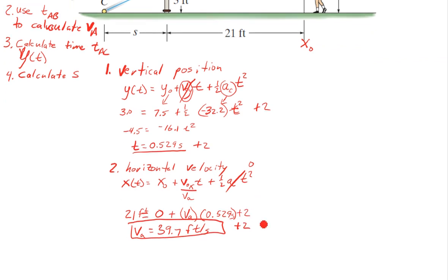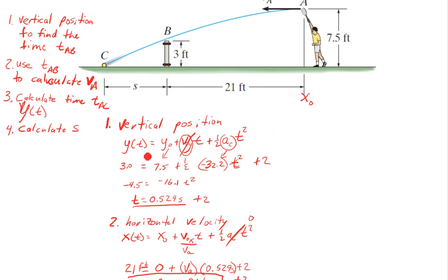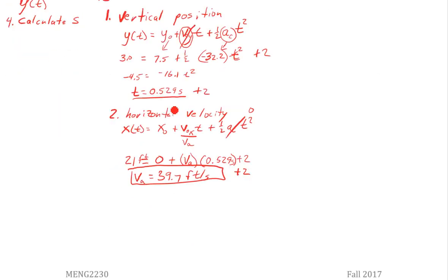Now finally we need to use both of those previous position equations to find our final time t from A to C. And using that to calculate S, we'd calculate this total x position. Subtract 21. Gets us our S. So step three, time from A to C. We have Y of t equals that same equation. Y0 plus V0Y times t plus one half AC t squared.